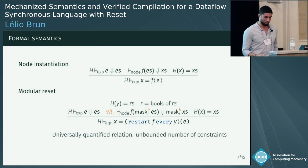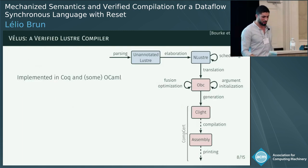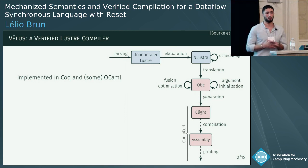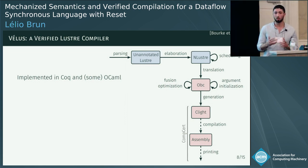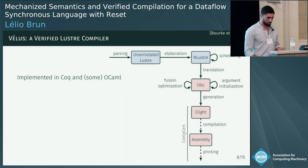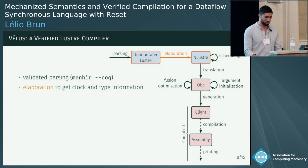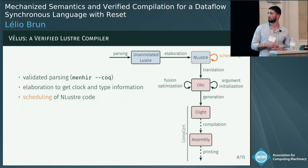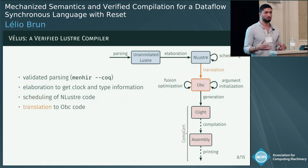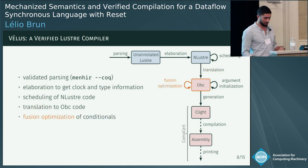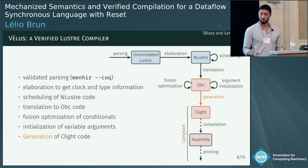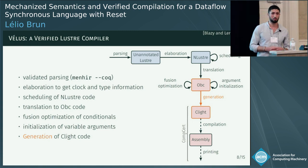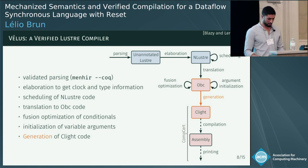Now that we have a semantics for the reset, we can show that the extended compiler is correct. Here is the previous architecture of the VELUS compiler, implemented in Coq with a bit of OCaml for the frontend. We parse the source file, add type and clock annotations, then schedule the normalized Lustre code to fix the order of computations. We generate code into the intermediate imperative language OPC, which is optimized by a fusion optimization to minimize branching. Then we generate code in CLite, the frontend language of CompCert, the verified C compiler, which generates assembly code.